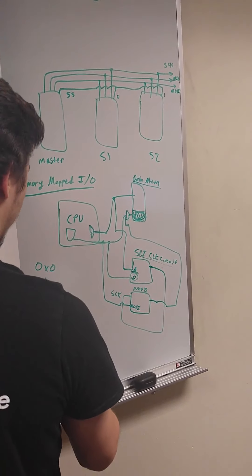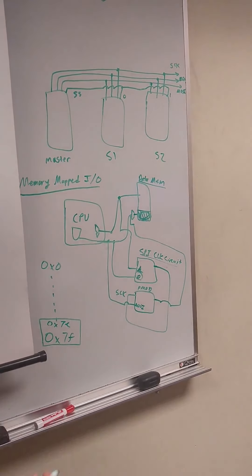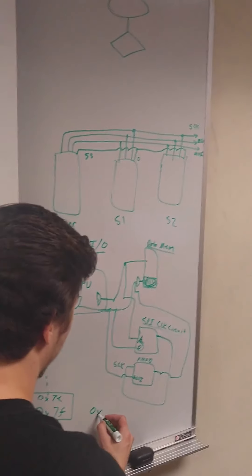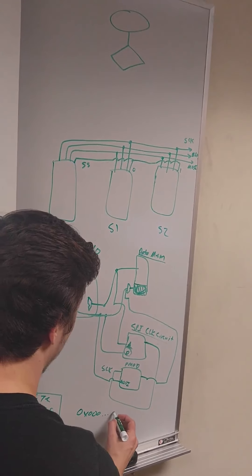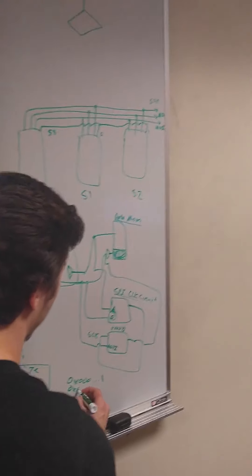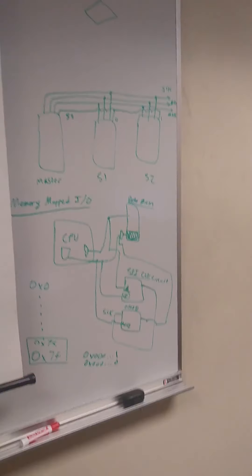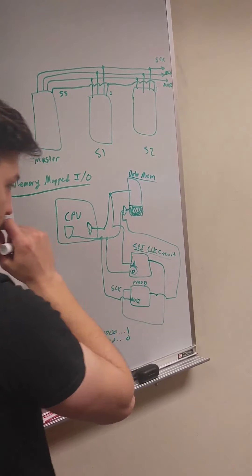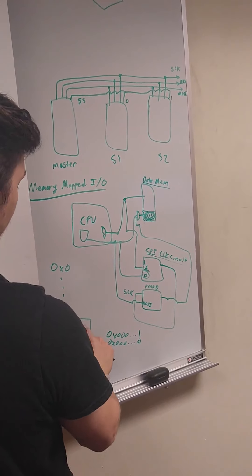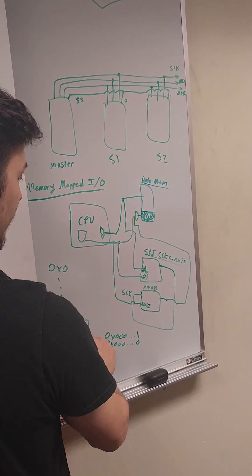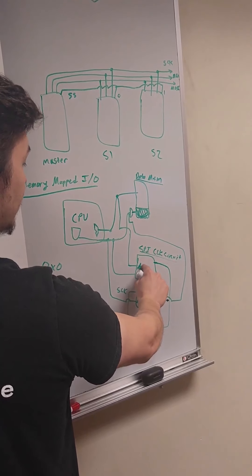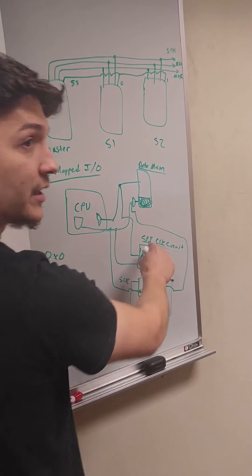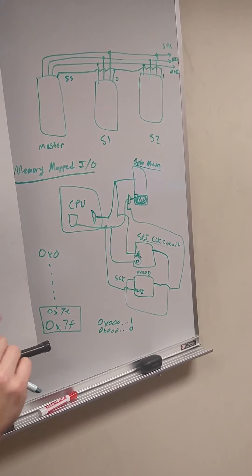For example, address 0x7E is used to start and stop the clock. For 'start clock,' you might give a data value of some bit pattern. When that gets fed in, it doesn't go to data memory — it goes to the peripheral circuit. When it recognizes that address 0x7E, it knows what to do: read the data and start or stop the clock.